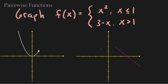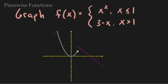This is what each graph looks like on its restricted domain — x squared when x is less than or equal to 1, and 3 minus x when x is greater than 1. Now we lay these graphs right on top of each other, and there's the final answer. What would make this faster is graphing on the restricted domain all on one graph. Let's go ahead and try one more.